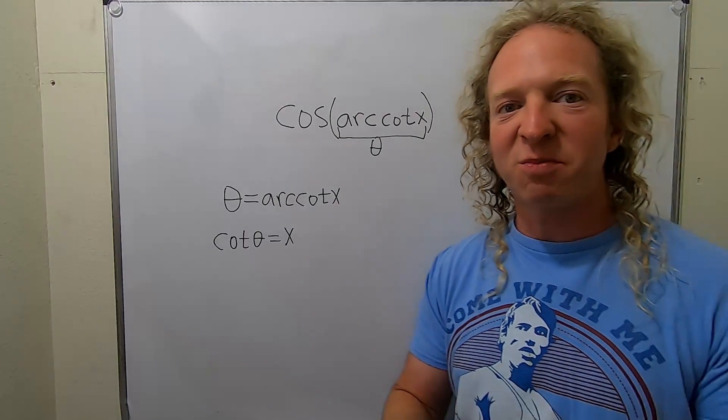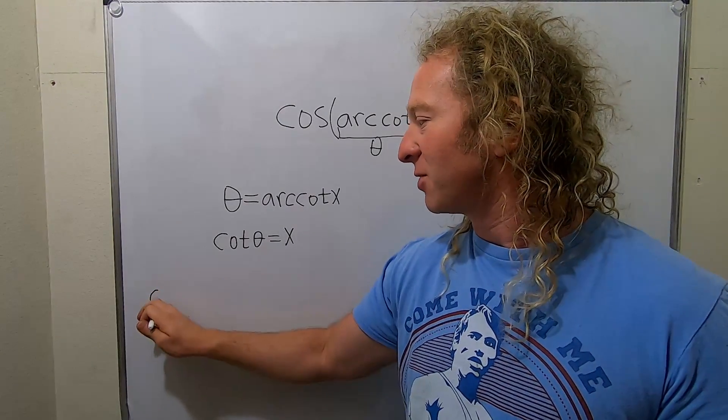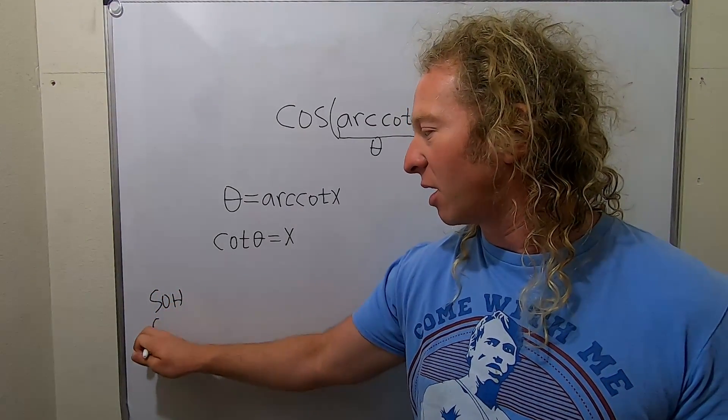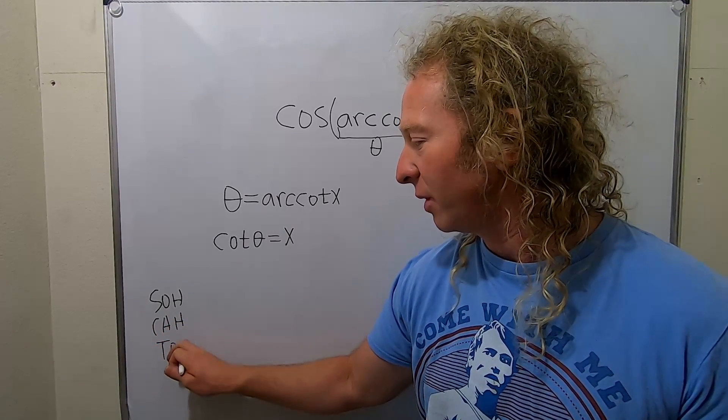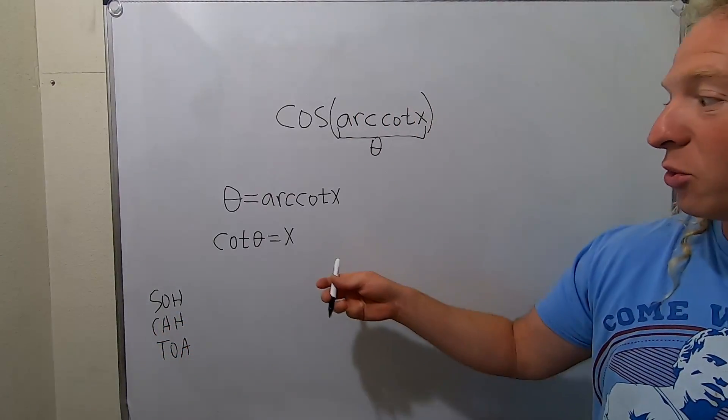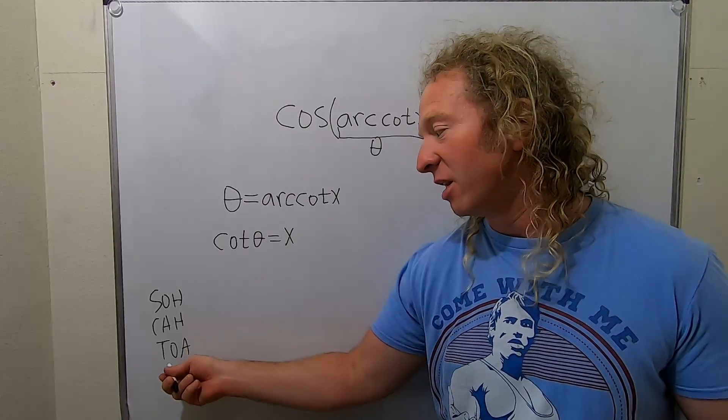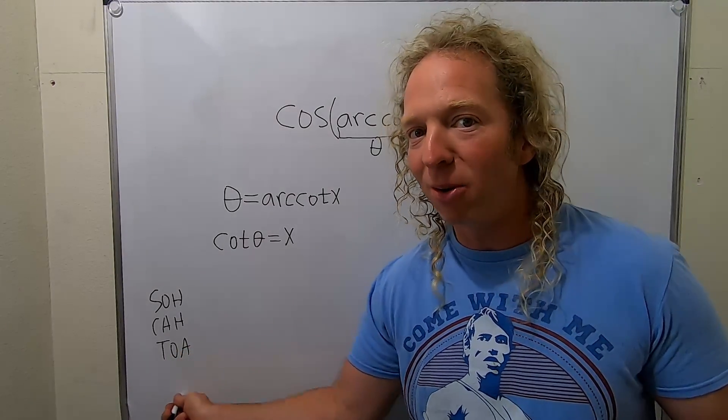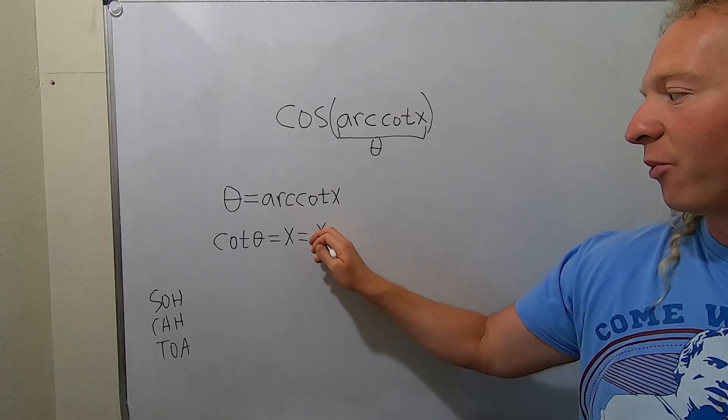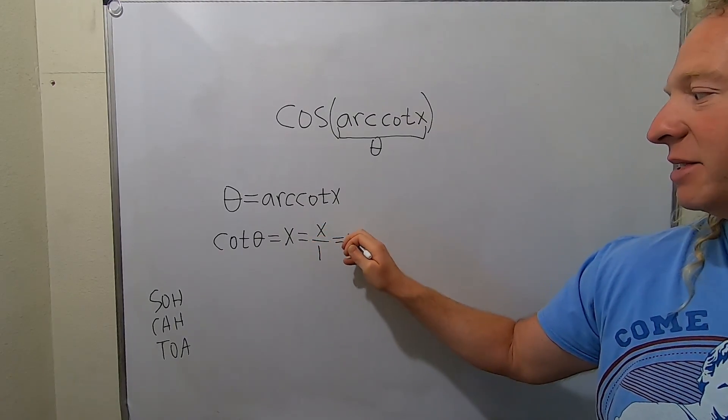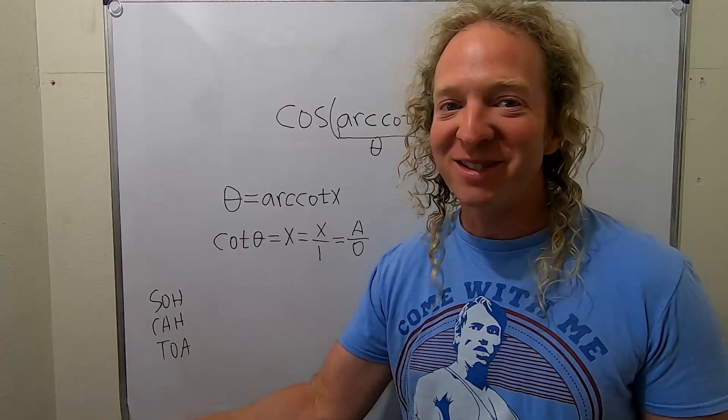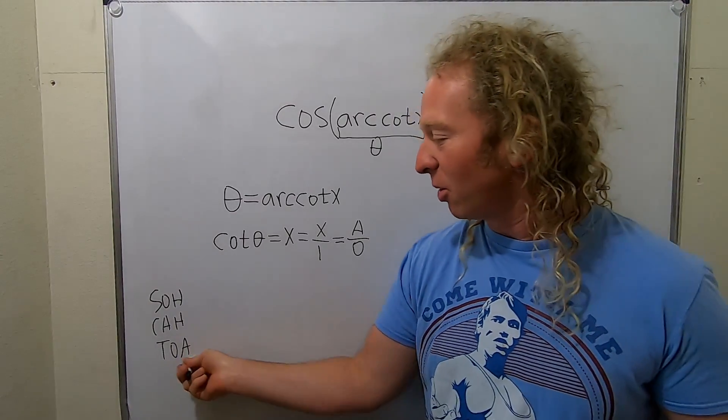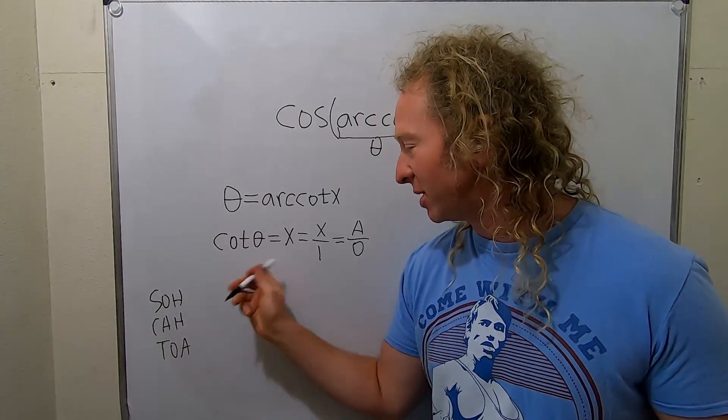Now we use an ancient proverb. SOHCAHTOA. So cotangent is one over tangent. So instead of oa it's ao. So write this as x over one and it's ao. Ao instead of oa because tangent is oa, cotangent is one over tangent so it's ao.